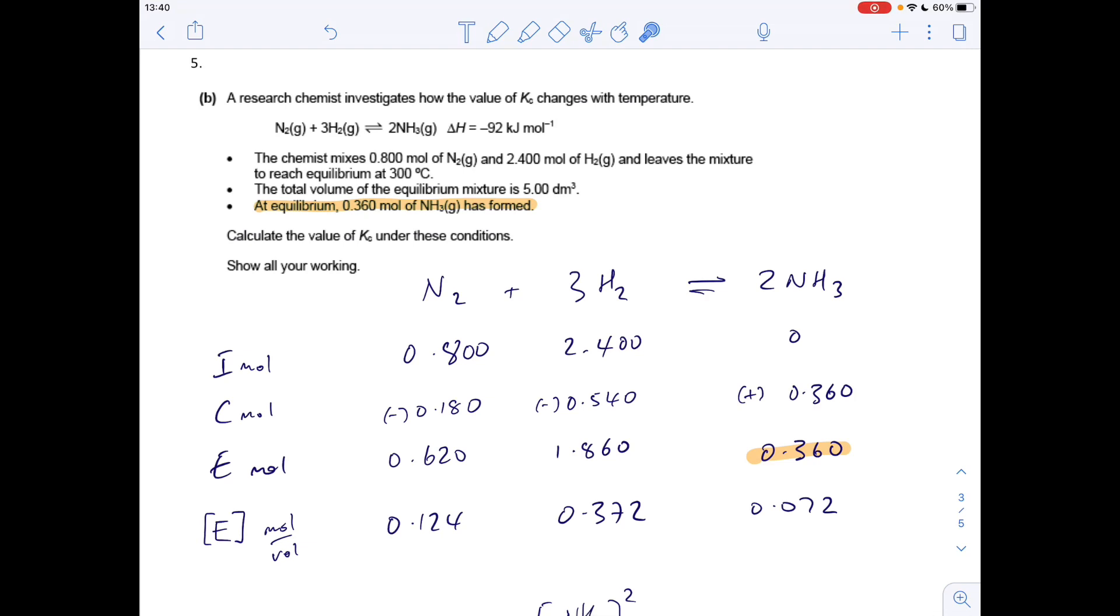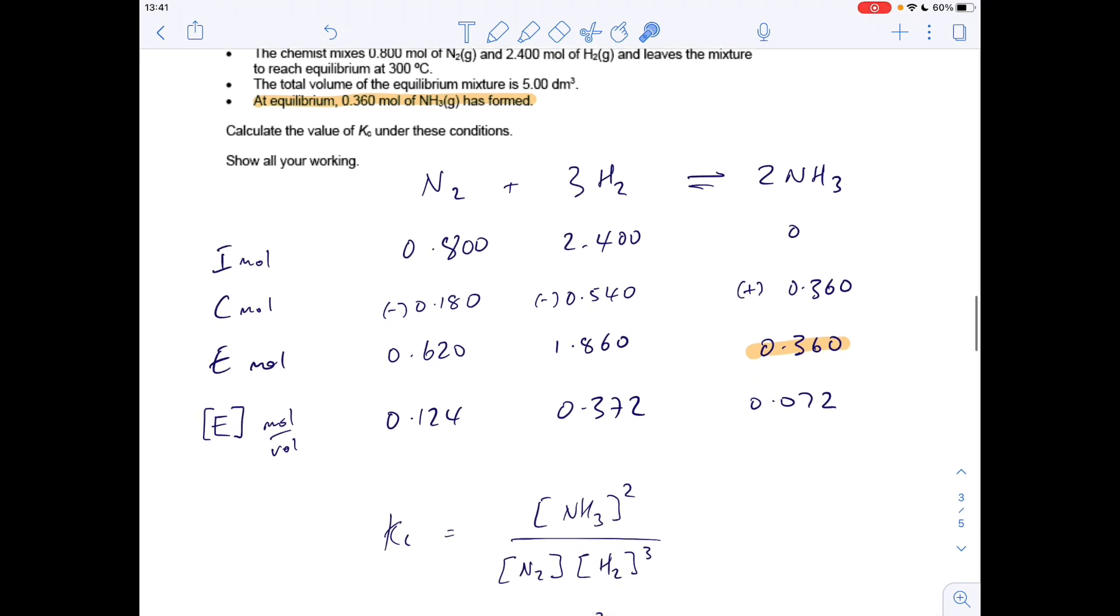Once we know that, we can apply the mole ratios like before. To form 0.36 moles of ammonia, half as many moles of nitrogen have to react from the ratio, so there'll be 0.62 left. The hydrogen can work out a couple ways. You could say three times as many moles of hydrogen need to react, getting you 0.54. Or you could think about it as to form 0.36 moles of ammonia, 3/2 moles of hydrogen have to react. Either way you get 0.54. Then the equilibrium concentrations: these moles divided by 5 gets you those.